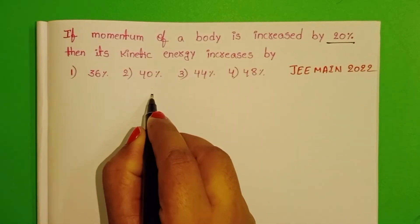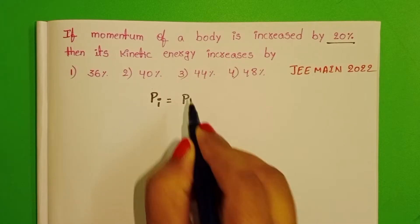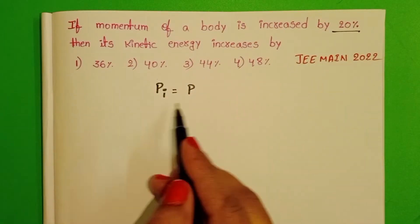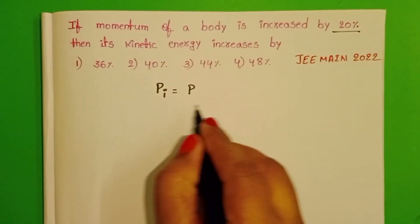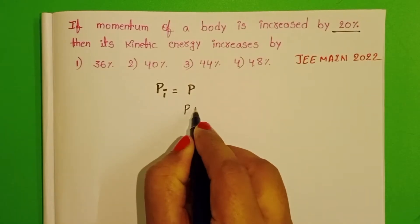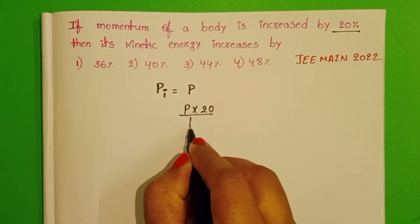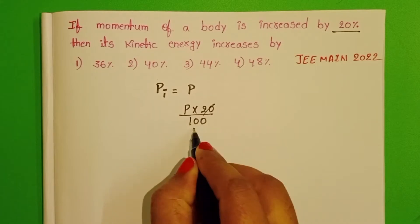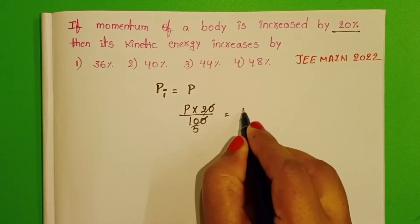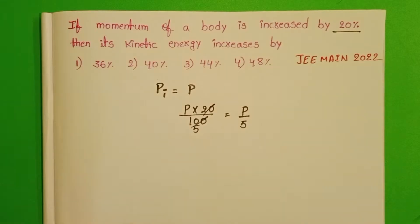Let us take initial momentum as P. It is increased by 20%, so we calculate P into 20 by 100, which gives P by 5. Therefore, the increase in momentum is P by 5.